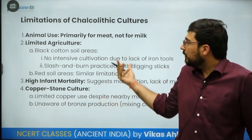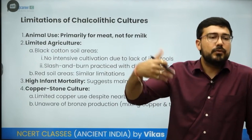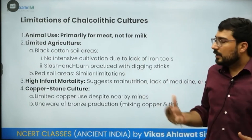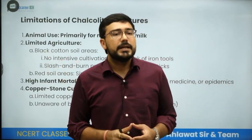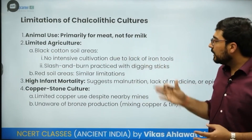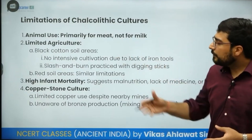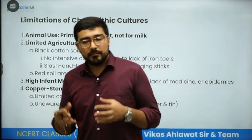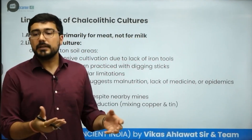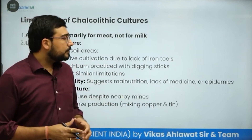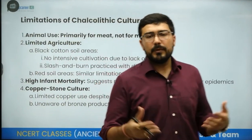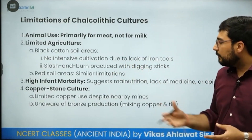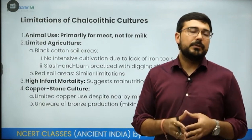According to R.S. Sharma's analysis, though the information available to him was more limited than what we have today, the Chalcolithic people used animal domestication but primarily for meat rather than milk. Agriculture was limited and could not produce surplus — otherwise they too could have built a civilization like Harappa. No intensive cultivation was possible due to lack of iron tools. High infant mortality has been observed, particularly in Maharashtra, where children were buried within the floors of the house itself, indicating problems of epidemics, lack of medicine, malnutrition, or possible genetic defects. Another major limitation was that these cultures were unaware of bronze production — they were truly a copper-stone culture.